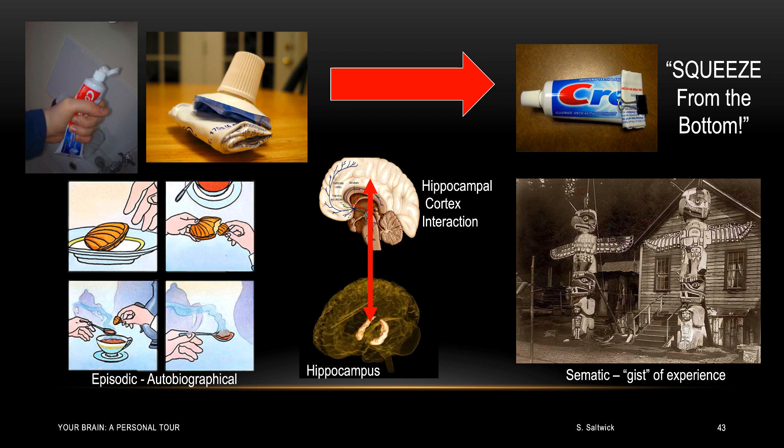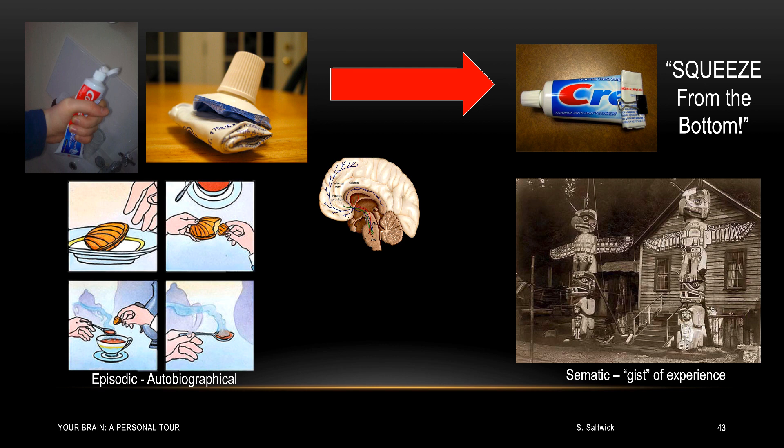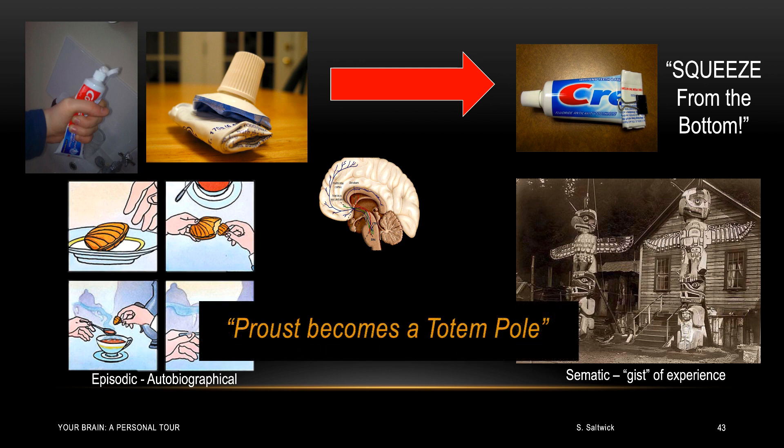Abstraction has an evolutionary benefit. It gives you the rules of the road in much less space. And if you're going to learn new stuff, you need the space in the brain. Additionally, by moving the memory into many areas of the cortex, you protect the memory. The hippocampus could go haywire like mine did, but you'd still retain the memory in a totem pole. Proust has become a totem pole.